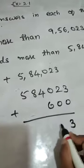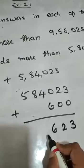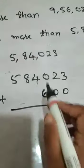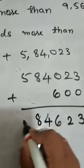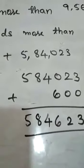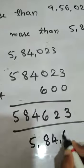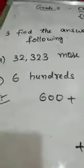4,023 plus, more than is nothing but plus, 600. 3 plus 0 is 3, 2 plus 0 is 2, 0 plus 6 is 6, 4 will be as it is, 8, and this is 5. So we will get 5,084,623. Easy answer.